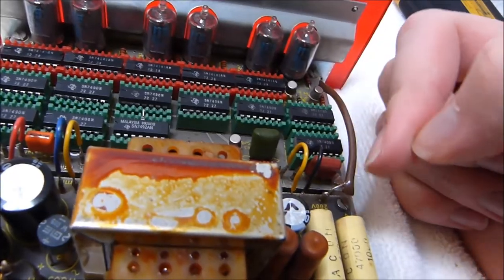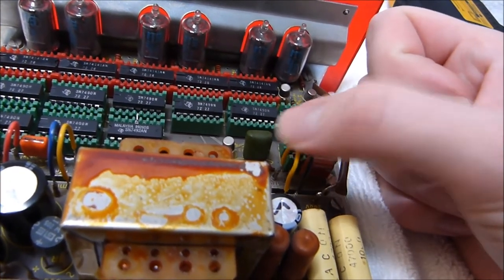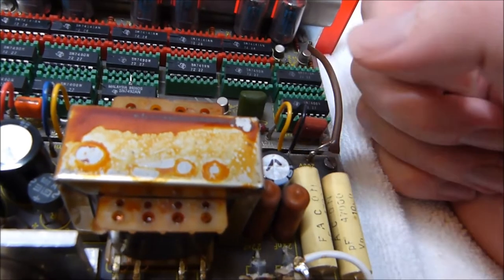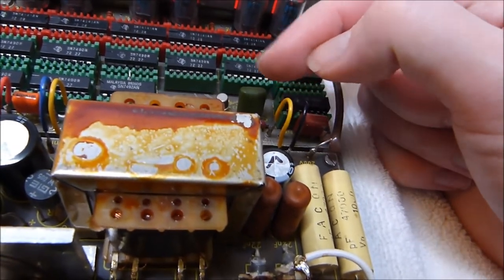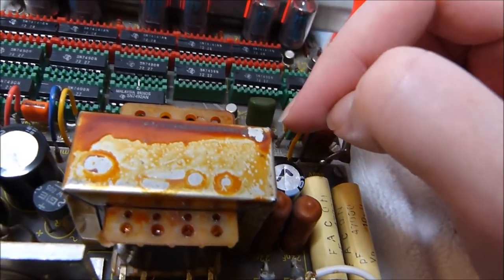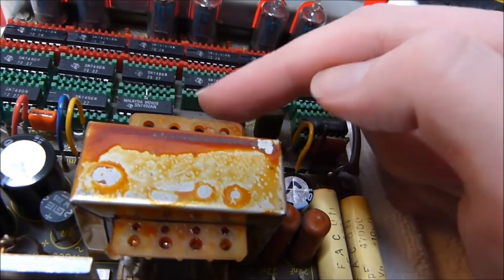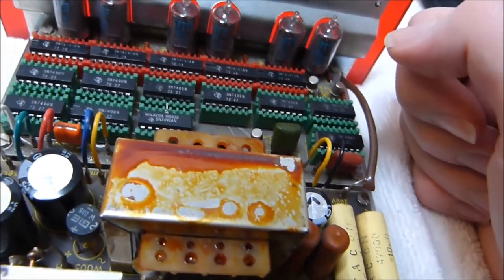To get the 60 hertz signal, they feed the 180 volt AC from the transformer through a resistor, and then clamp it with that diode there, and then they use these two transistors to condition it into a square wave.